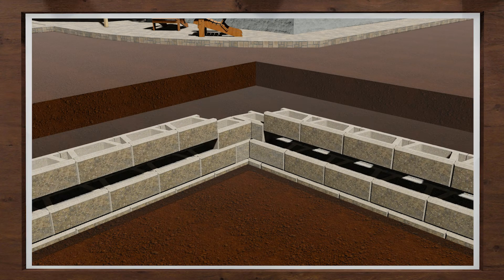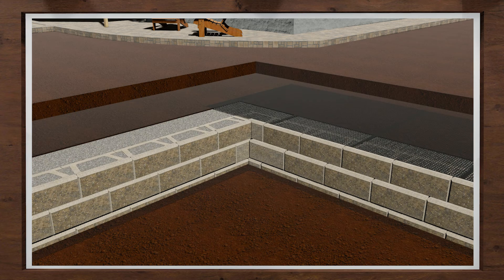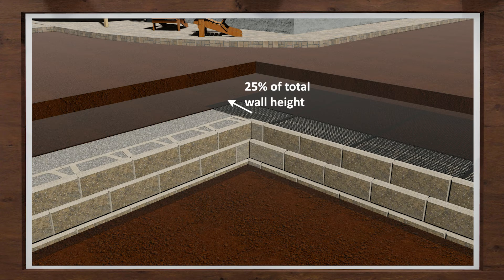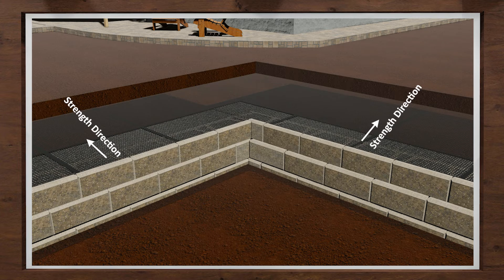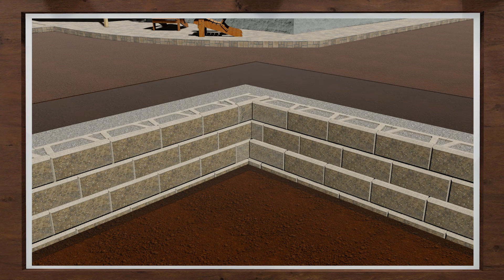Geogrid will be needed on this next course just in the reverse direction of the first course. Run it 25% past the corner, then place the next set of grid running perpendicular down the opposite wall. Make sure it is installed in the proper strength direction, which is always into the hillside. Continue this process to the top of the wall with grid on every other course as shown in approved plans.